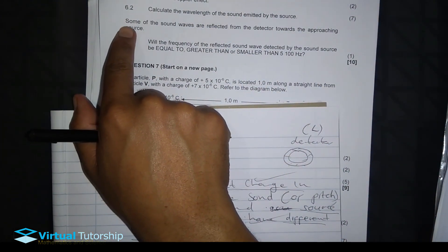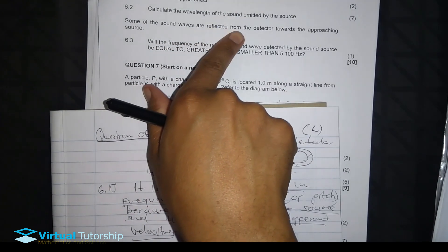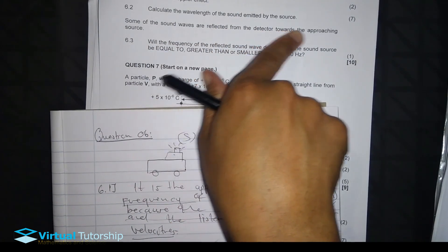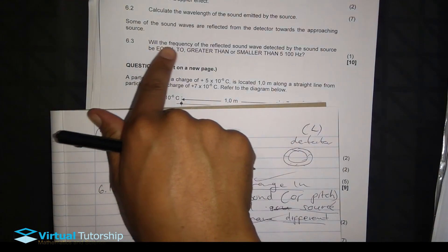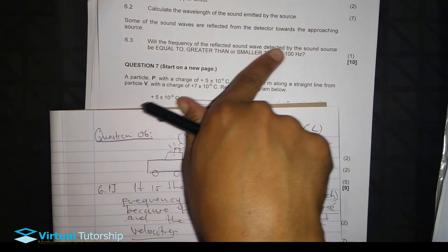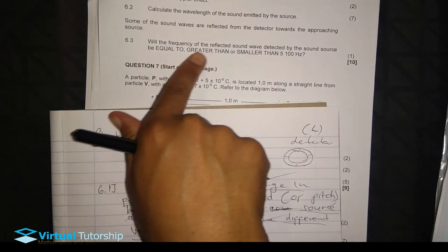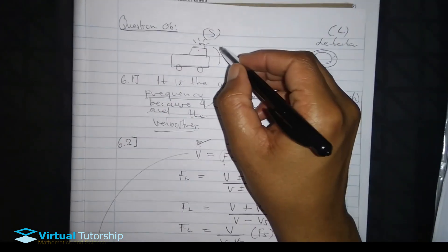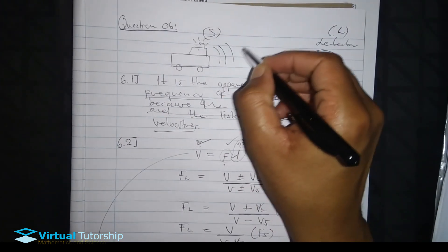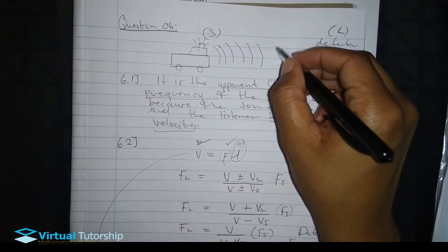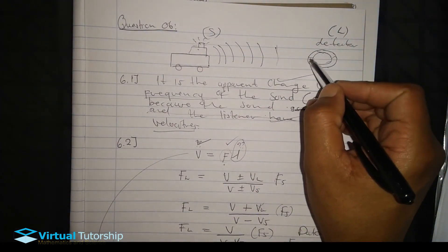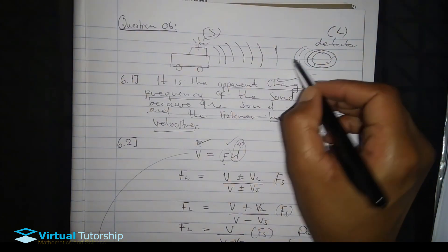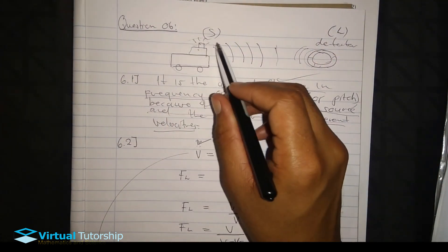Question 6.3: Some of the sound waves are reflected from the detector back towards the approaching sound source. Will the frequency of the reflected sound wave detected by the sound source be equal to, greater than, or smaller than 5100 hertz? The detector reflects some waves, and the ambulance — the sound source — is approaching.